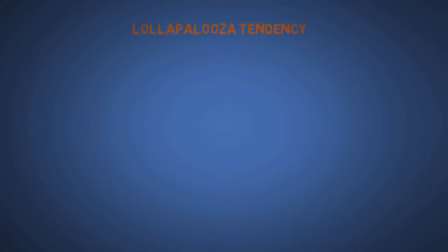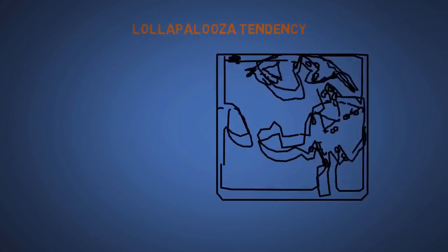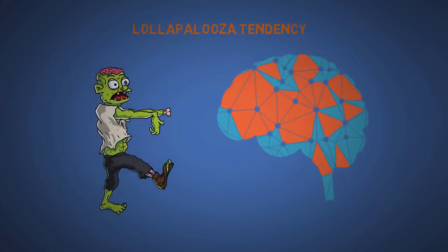The twenty-fifth and most important of all is the Lollapalooza tendency. This basically says if enough cognitive biases are activated at the same period of time, you'll become a helpless zombie.